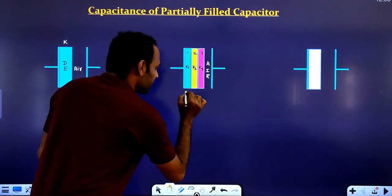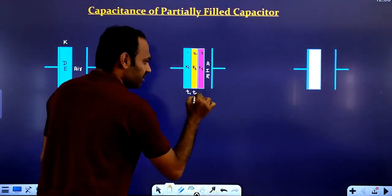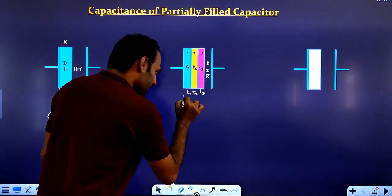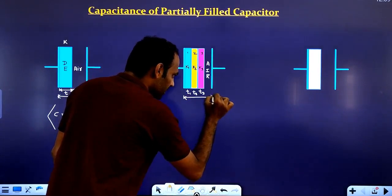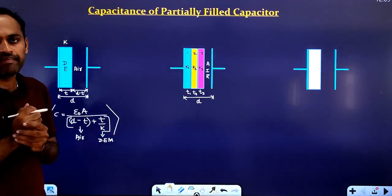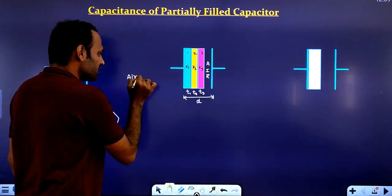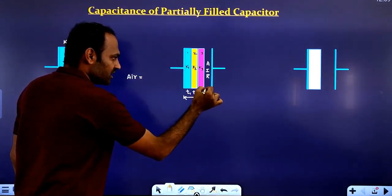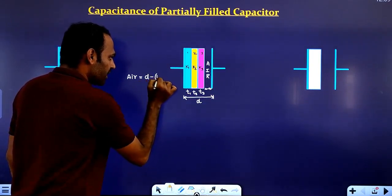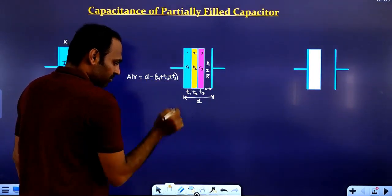Let the thickness of the first dielectric medium be T1, the second be T2, and the third be T3. Let the distance between the two plates be D. The distance in air is D minus T1 plus T2 plus T3.